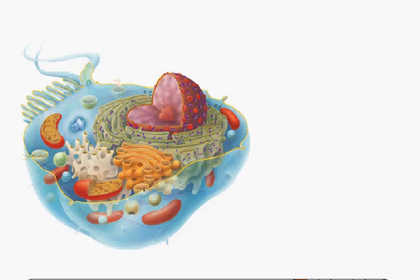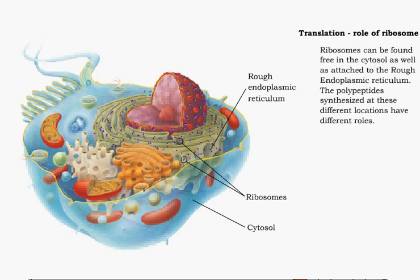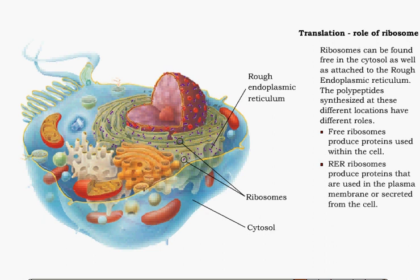Proteins are synthesized at ribosomes. The position of the ribosome determines where those proteins are used. Ribosomes in the cytosol produce proteins that will be used in the cell. Ribosomes at the rough endoplasmic reticulum produce proteins that are used in the membrane or secreted from the cell.